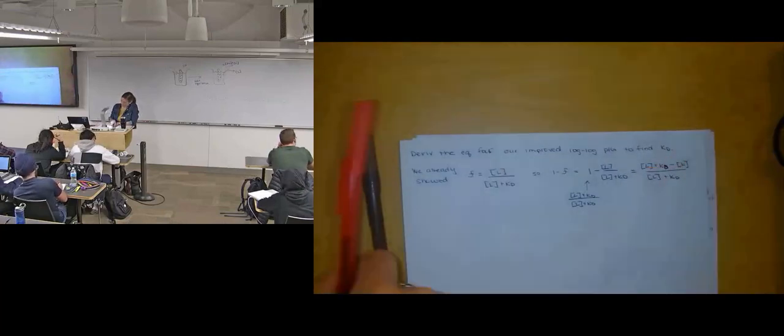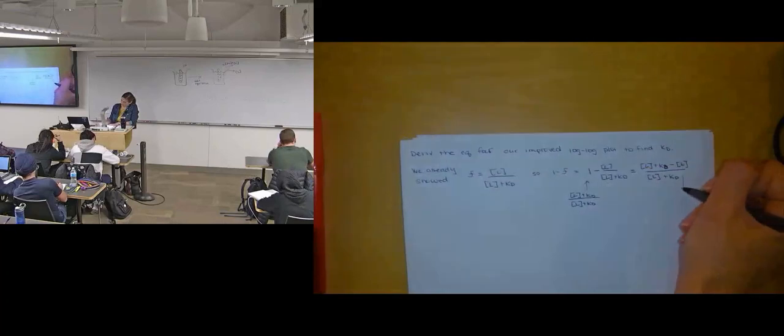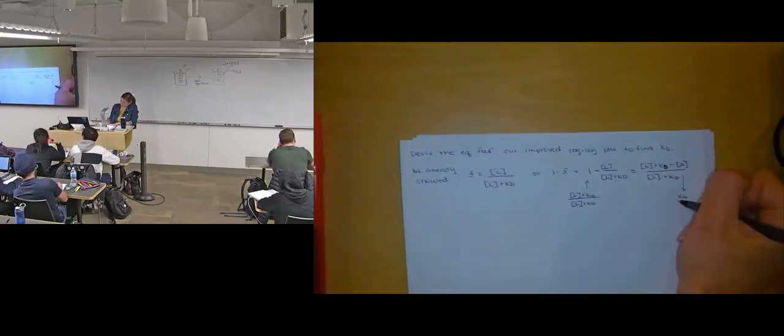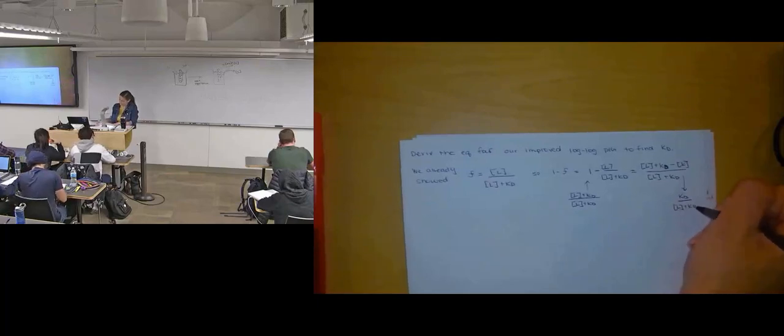This will be equal to concentration of L plus Kd minus L, all over free ligand plus Kd. So these are of course gone and it now looks like, so 1 minus F is Kd over, that's dissociation. That's good.